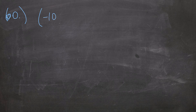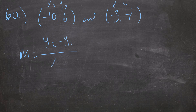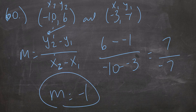60 is the same exact concept. This time we have negative 10, 6 and negative 3, negative 1. I'll call this one x2, y2 and this one x1, y1 — just to show you it doesn't matter. So m equals 6 minus negative 1 all over negative 10 minus negative 3. That's 7 over negative 7, which means my slope is going to be negative 1. That's it for 60.